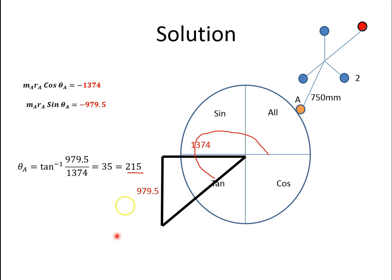I have those values now. I want to get MaRa, so the value of this vector. It is the square of 1374 squared plus 979.5 squared, which is 1687.4. I know Ra is 225. That was given to us in the question. Therefore, I can calculate Ma, which is 7.49 kgs.